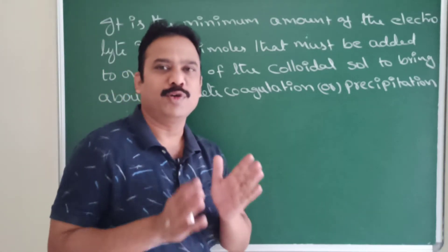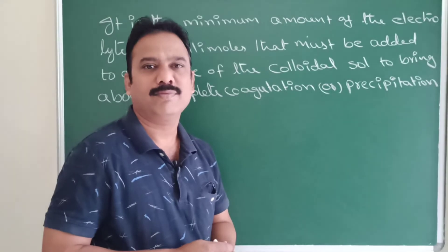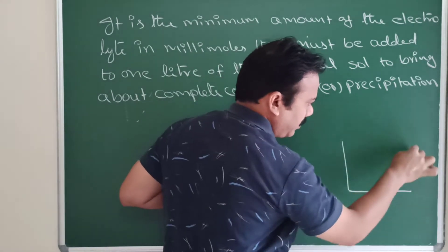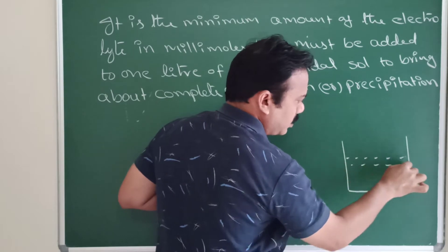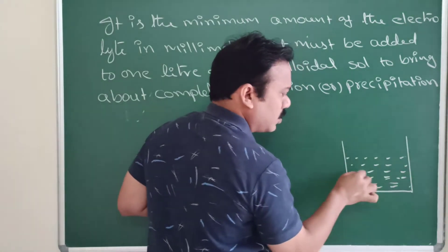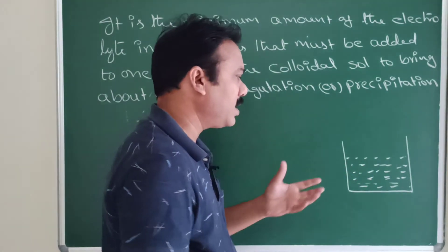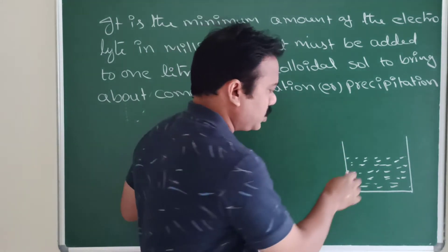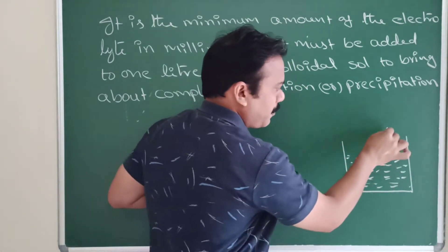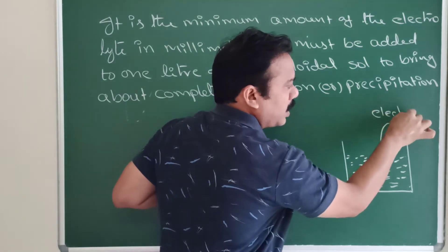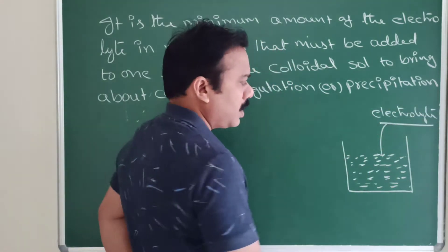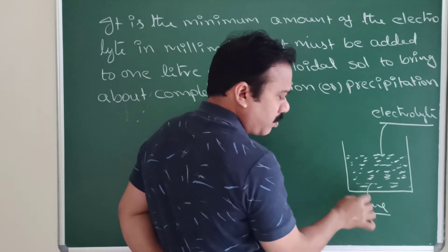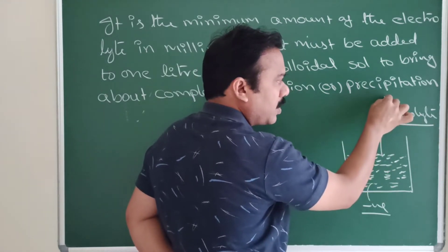Today I am going to explain about flocculation value and flocculating power. I am taking a lyophobic colloidal solution — for example, gold sol, silver sol, and other inorganic metal sols and acidic dyestuff sols. These are lyophobic sols. For lyophobic sols, electrolytes have the ability to cause coagulation and precipitation.